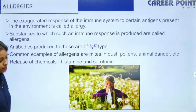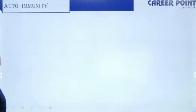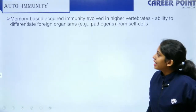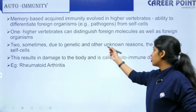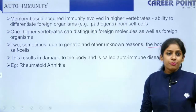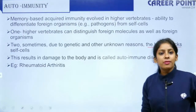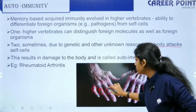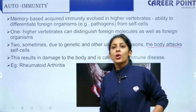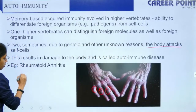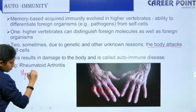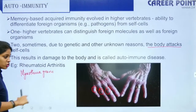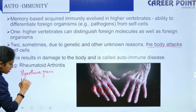Autoimmunity is when the body cannot differentiate between self and non-self and starts attacking its own cells. Due to genetic or unknown reasons, the immune system attacks self cells. Examples include rheumatoid arthritis (joints weakened), myasthenia gravis (neuromuscular junction disturbed), and multiple sclerosis.